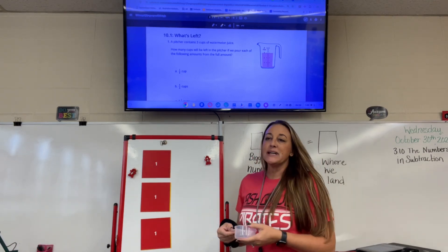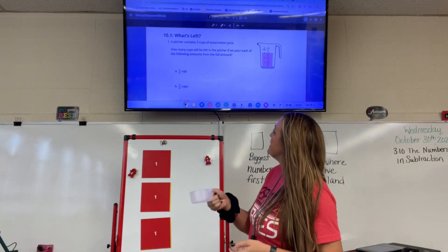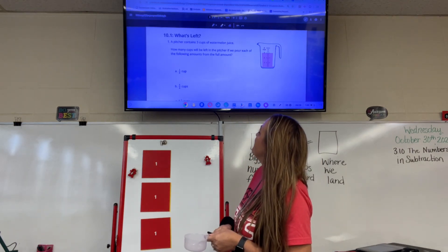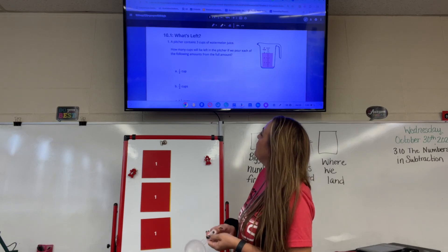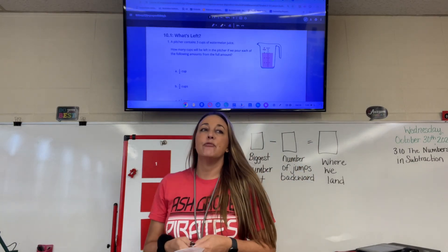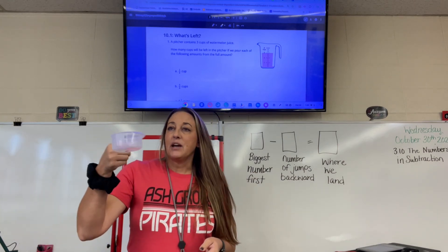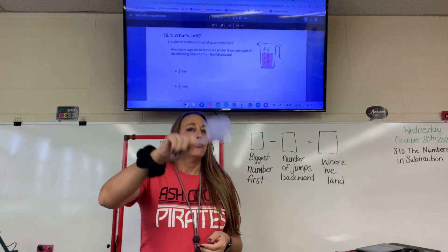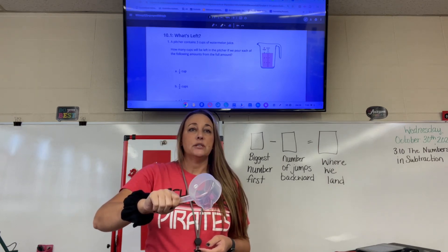A pitcher contains three cups of watermelon juice. How many cups will be left in the pitcher if we pour each of the following amounts from the full amount? We've got a pitcher with one cup, two cups, three cups of watermelon juice.